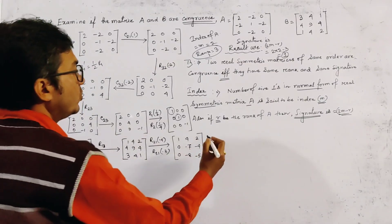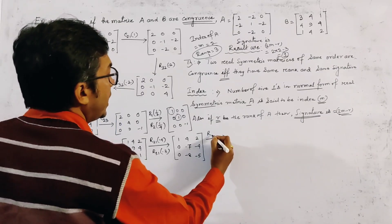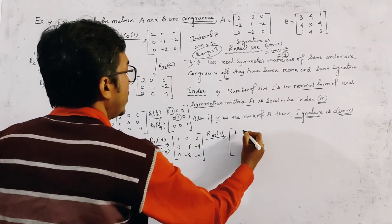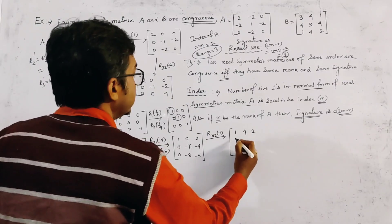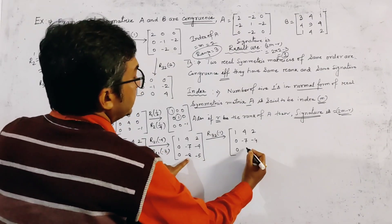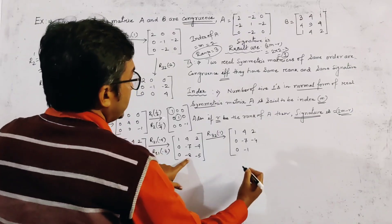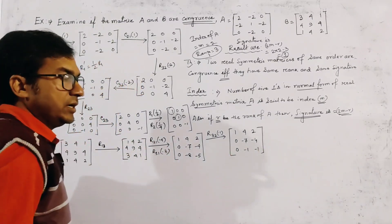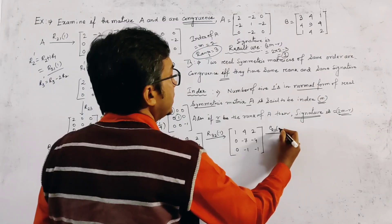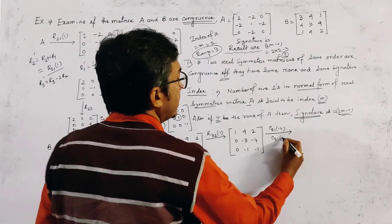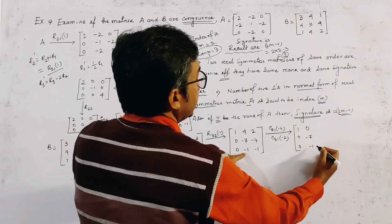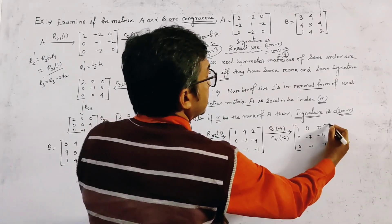Next, we apply operation R3(2, -1), giving the matrix [1, 4, 2], [0, -7, -4], [0, -1, -1]. Then we apply two column operations together: C2(1, -4) and C3(1, -2). This gives [1, 0, 0], [0, -7, -1], [0, -1, -1].